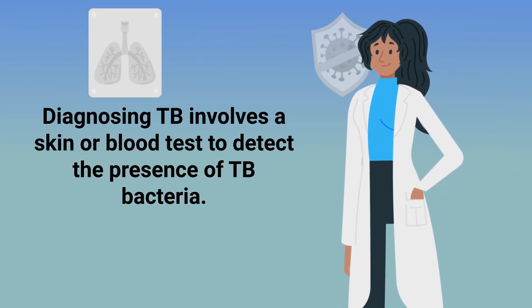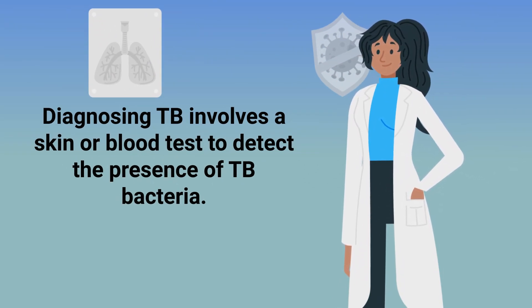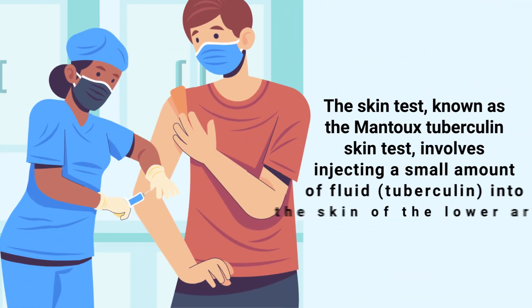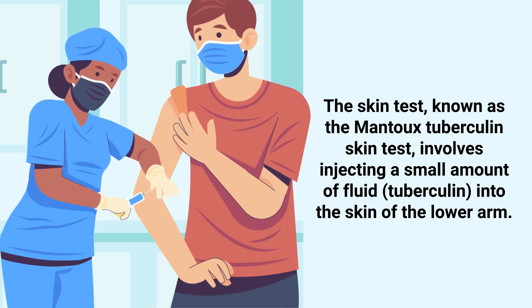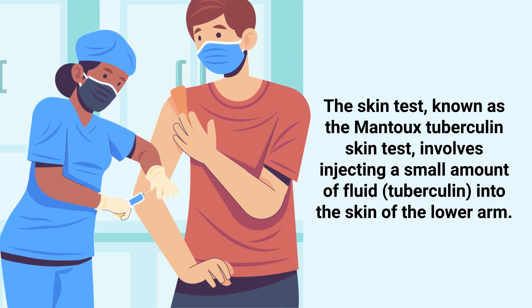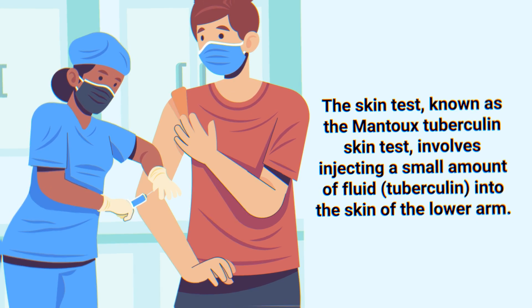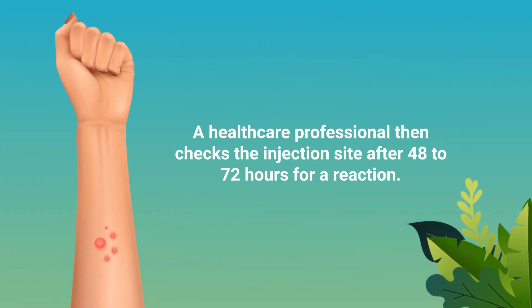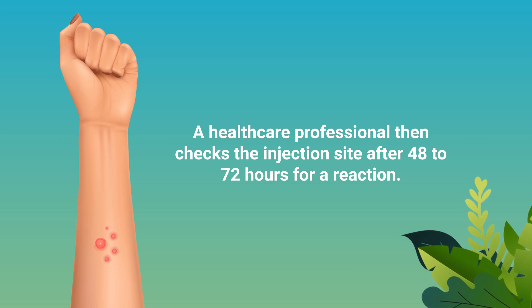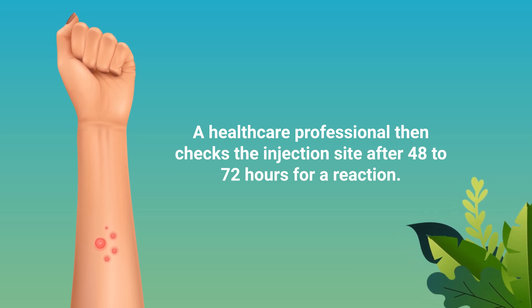Diagnosing tuberculosis involves a skin or blood test to detect the presence of TB bacteria. The skin test, known as the Mantoux tuberculin skin test, involves injecting a small amount of fluid into the skin of the lower arm. A healthcare professional then checks the injection site after 48 to 72 hours for a reaction.